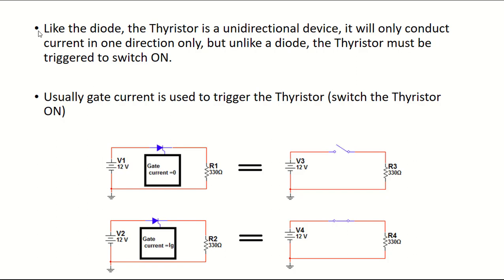The thyristor passes current in one direction like a diode, but in order for a thyristor to turn on, a current must pass through the gate. So there are two conditions for the thyristor to conduct: number one, it must be forward biased; number two, the gate current must be greater than the minimum trigger current.